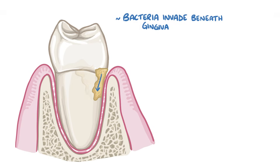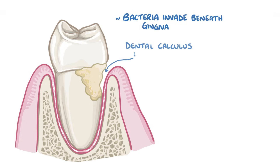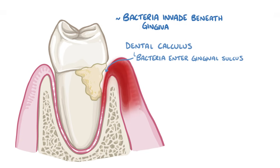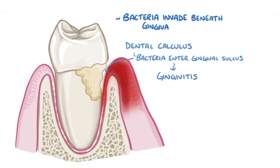Eventually, it can form a hard mass called a dental calculus. Dental calculus creates a nice space for bacterial plaque formation because it's hard to remove, and from there bacteria can enter the gingival sulcus and cause gingival inflammation, or gingivitis.